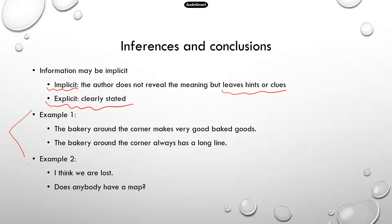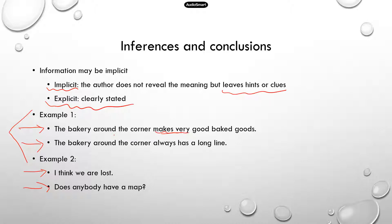I have two short examples. The first version is explicit, which is clearly stated, and the second version is implicit. For example, version one: 'The bakery around the corner makes very good baked goods.' This is pretty clear. The second: 'The bakery around the corner always has a long line.' This implies there are always a lot of people going there to buy stuff, so their food must be pretty good. You can see there are really two ways to express the same idea.